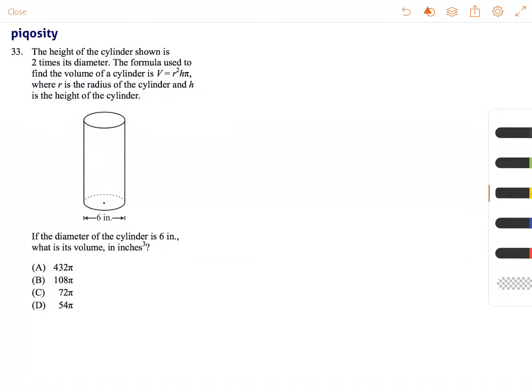This is Stephen and this is testing your knowledge of volume of objects. The question reads: the height of the cylinder shown is 2 times its diameter, so height equals 2 times d.